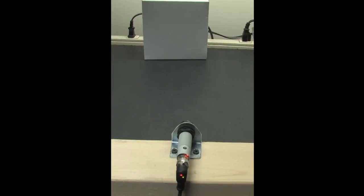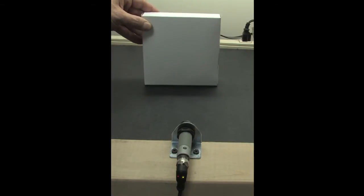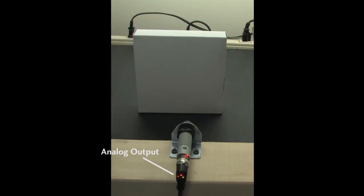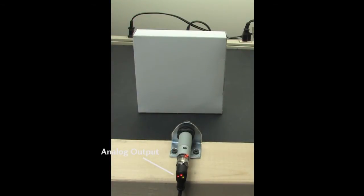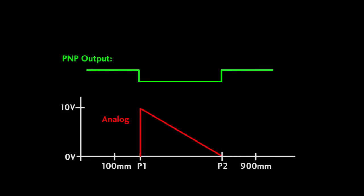You can see that here. This LED indicator that is connected to the discrete output is OFF when a target is in range. Note that this also inverts the analog output. The LED connected to the analog output gets brighter as I move closer to this sensor. That's the opposite of what we had before, right? So now the voltage looks like this on our chart when we invert the output.